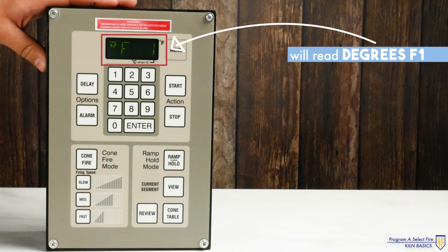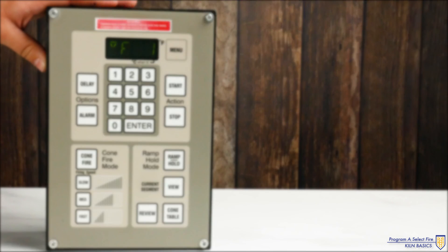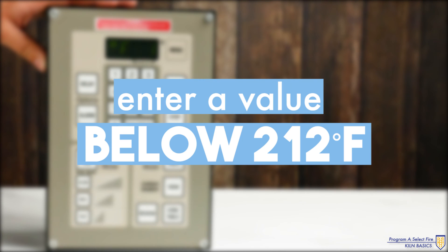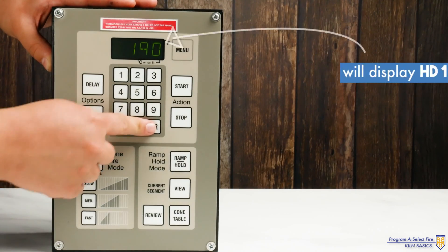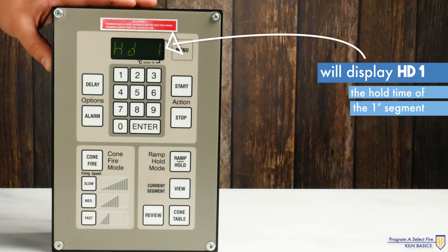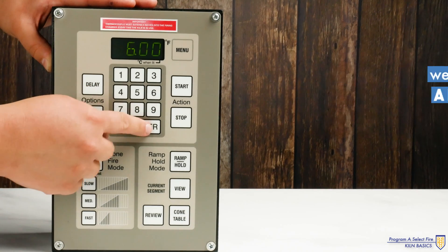It will then read degrees F1 asking for the target temperature of the first segment. Enter a value below 212 degrees Fahrenheit. We'll enter 190 and hit enter. It will then display HD1 asking for the hold time of the first section. We recommend at least a few hours to ensure all moisture is removed before proceeding.